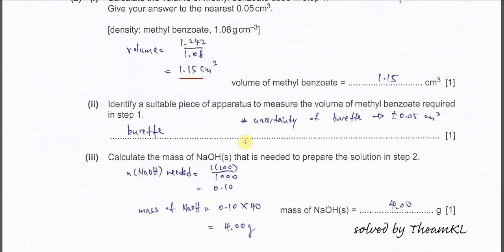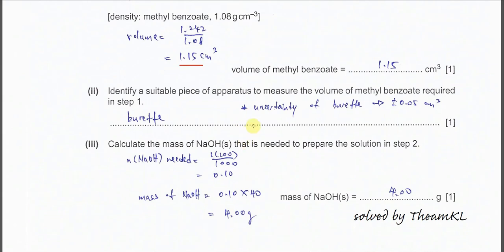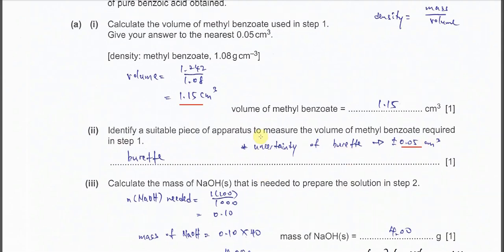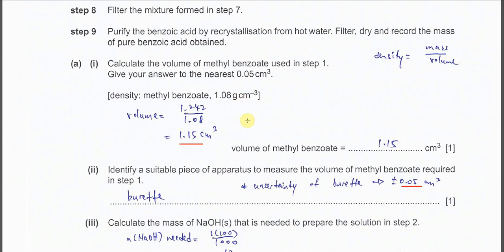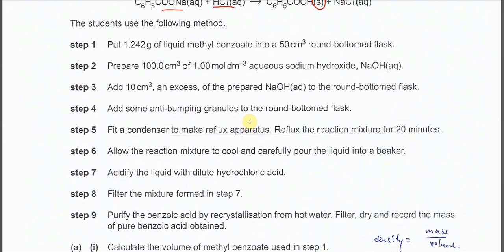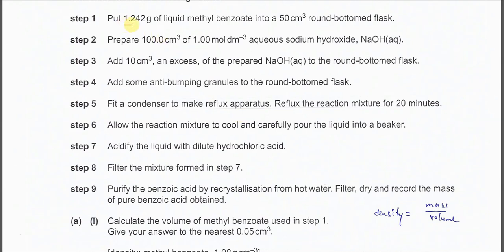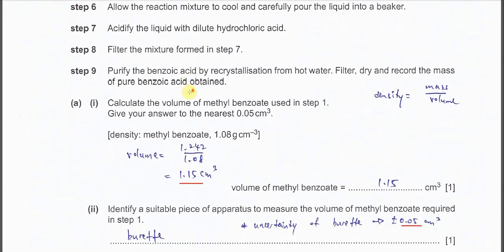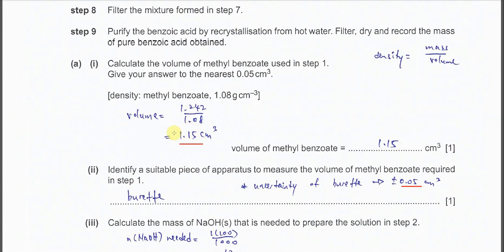Part A2: Identify a suitable piece of apparatus to measure the volume of methyl benzoate required in Step 1. We should use a burette because the burette's uncertainty is ±0.05 cm³. Since we need to take about 1.15 cm³ of the liquid, it is better to use the burette.